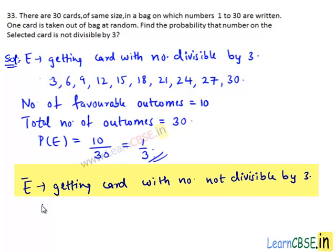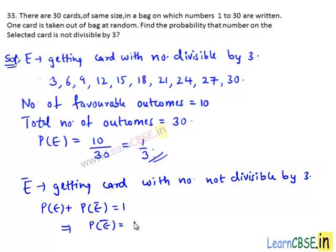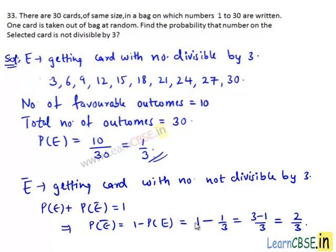We have P(E) plus P(E-bar) equals 1. This implies P(E-bar) equals 1 minus P(E), which is equal to 1 minus 1/3. That equals 3 minus 1 divided by 3, which is equal to 2 divided by 3. Therefore, the probability of getting a card with a number not divisible by 3 is 2 divided by 3.